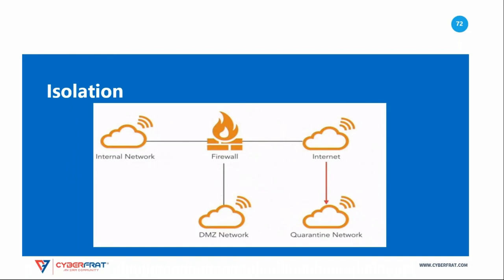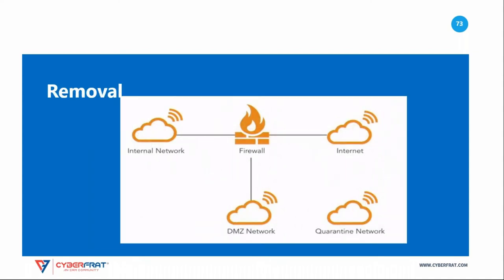Isolation takes segmentation to the next level. Instead of simply moving the compromised system to a different VLAN that is still attached to the corporate network, compromised systems are moved to a network that is completely disconnected from the rest of the network. Depending on the isolation strategy used, the systems may still be able to communicate with each other and with the internet so they can communicate with the attackers. Finally, removal completely disconnects impacted systems from any network — they are completely unable to communicate with other systems or the internet, and the attacker is cut off. This approach will alert the attacker that the attack was detected, but it does prevent the compromised systems from continuing to cause damage on the network.